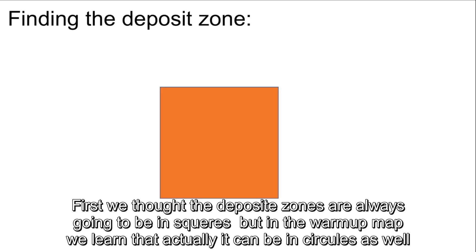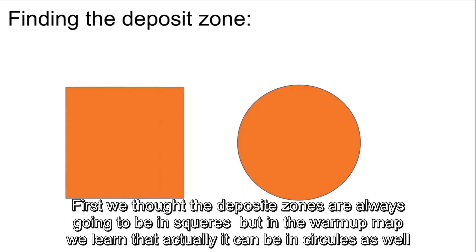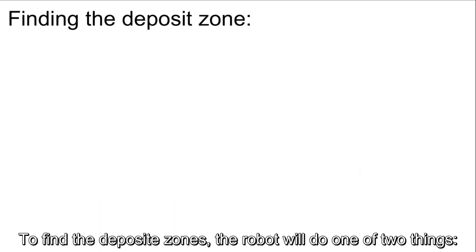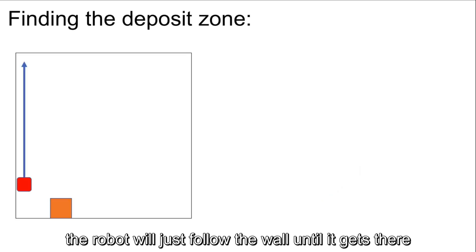First, we thought the deposit zones were always going to be squares, but in the warm-up map we learned that it can actually be a circle as well. To find the deposit zones, the robot will do one of two things. If there is a deposit zone attached to the wall on the map, the robot will just follow the wall until it gets there.